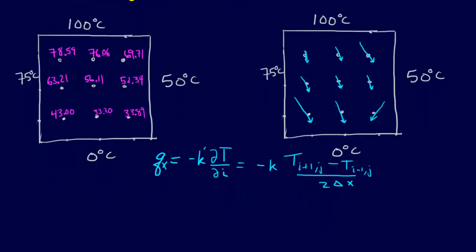So that's what we had for X, and then we could say QY equals, so again, it's our partial, but this is going directly to this minus K prime, that's going to be T I J plus 1 minus T I J minus 1 over 2 delta Y.